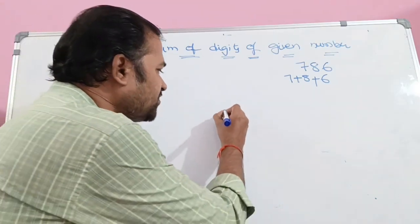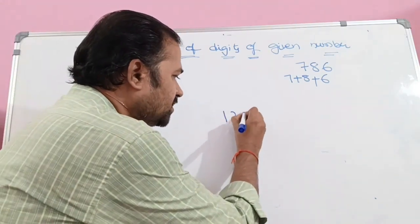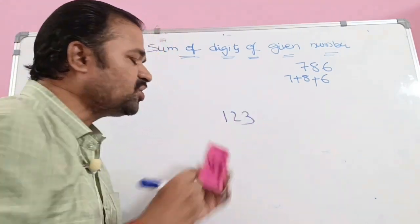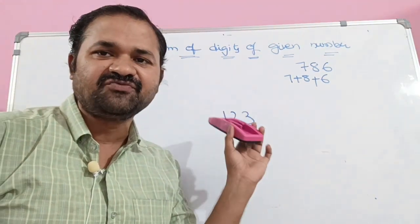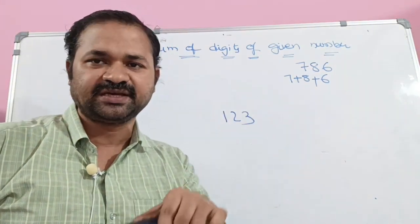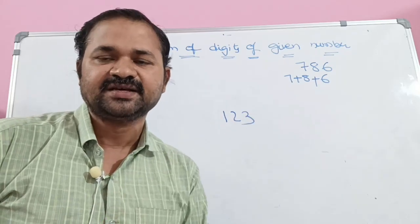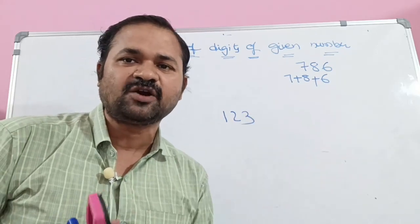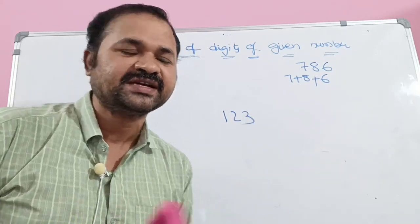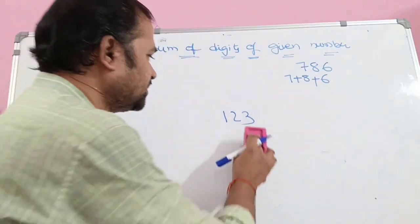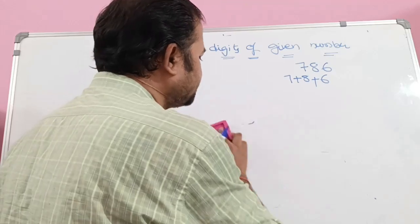Suppose the number is 123. The digits of 123 are 1, 2, 3. We need to find their sum. The output will be 6. So this is what we need to implement.